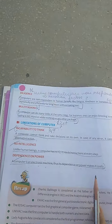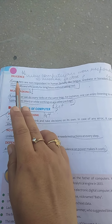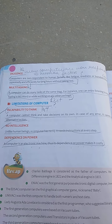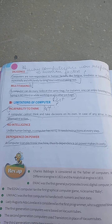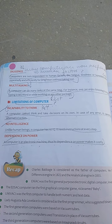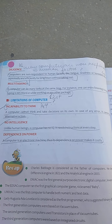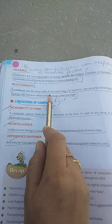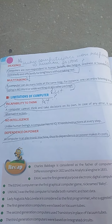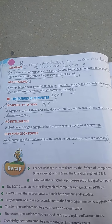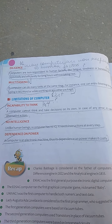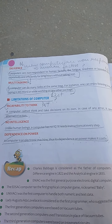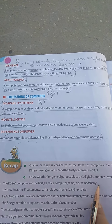Next is diligence. Computers can never be tired or feel fatigue or boredom. As human beings doing repetitive work feel bored and tired, computers as machines don't feel any fatigue — this is called diligence. Next is multitasking, which means doing various tasks at the same time. For example, you can play a game, listen to music through a media player, and send a print command to the printer all at the same time. This is called multitasking.